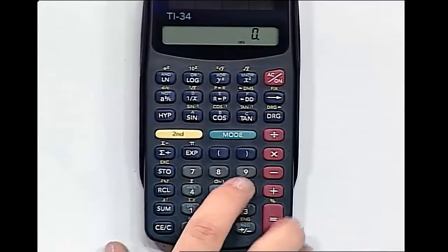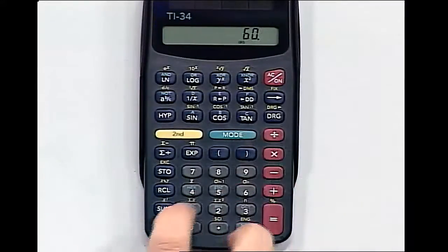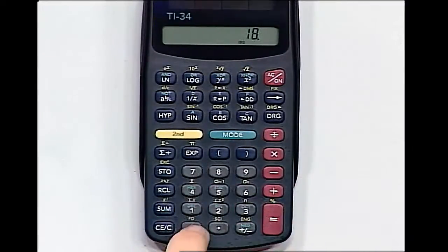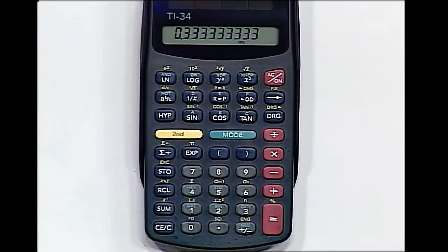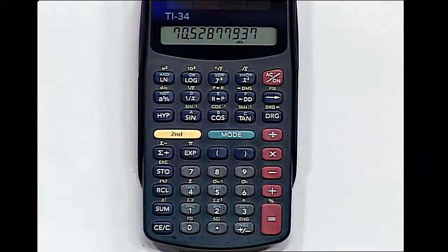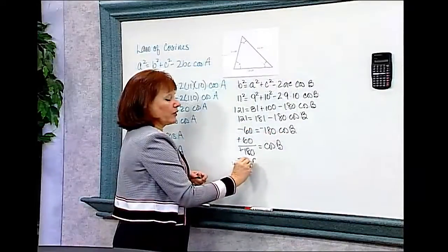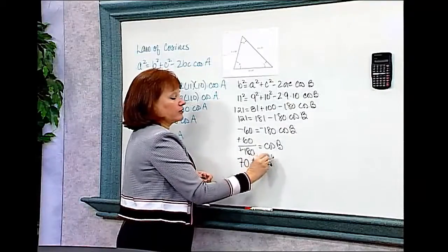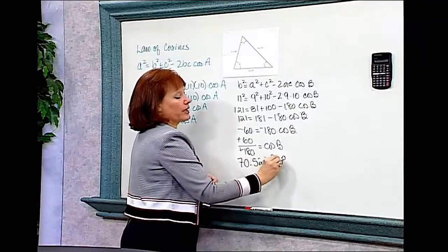On the calculator, I'll take 60 divided by 180, which equals 0.333. That decimal represents the cosine of angle B, not the angle itself. So to find angle B, I hit the second key and cosine, and I get 70.5288 degrees. So angle B equals 70.5288 degrees.